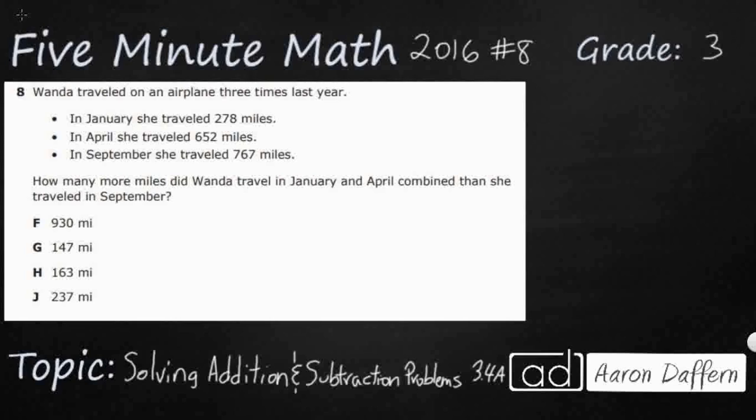So we have a word problem here. Wanda is traveling on an airplane three times last year. We have April, January, and September - three different numbers, each going to the hundreds place. The question is, what are we going to need to do with these numbers? Do we add them all, add and subtract, or subtract two of them?